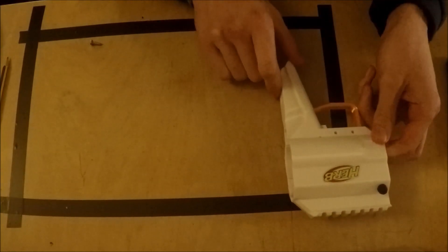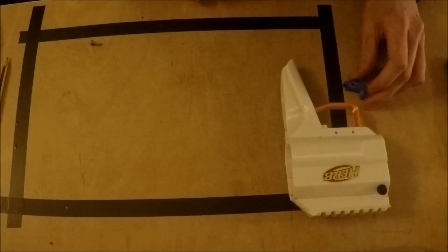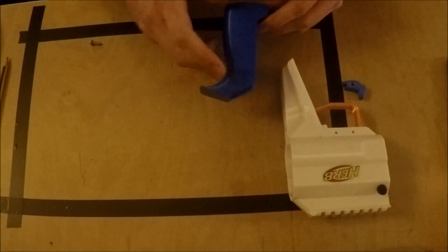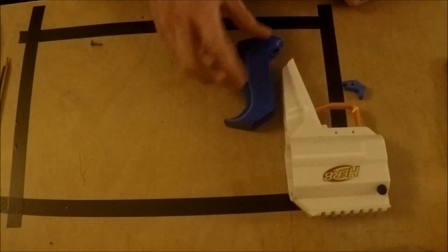Now with the 3D printed parts, I've modified the receiver, I've modified the sear, I've modified the handle just slightly. It has just a little hole in the bottom to let the tube come out.